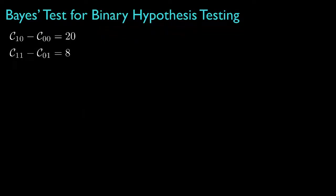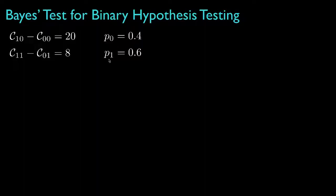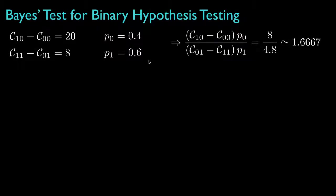Let's look at an example for which the difference in the cost when H0 is true is equal to 20, and the difference in the cost when H1 is true is equal to 8. Furthermore, let's assume that the prior probability that H0 is true is 0.4, so that the prior probability for hypothesis 1 is 0.6. This means that the likelihood ratio test threshold will be 8 divided by 4.8, or approximately 1.6667, or 5 thirds.